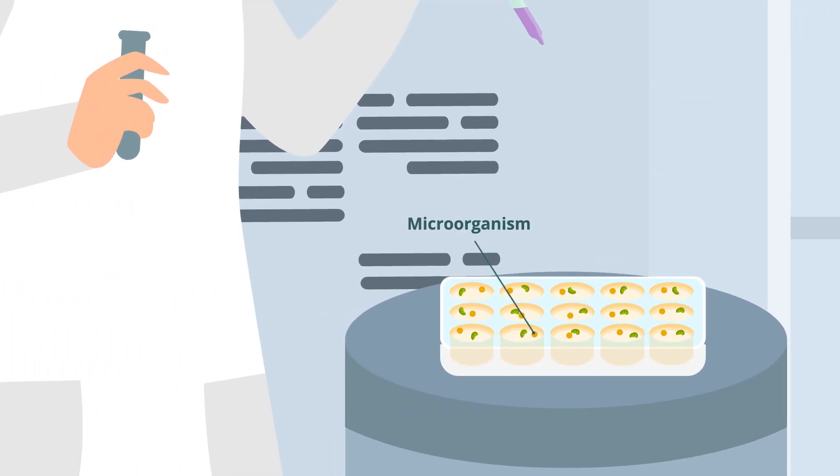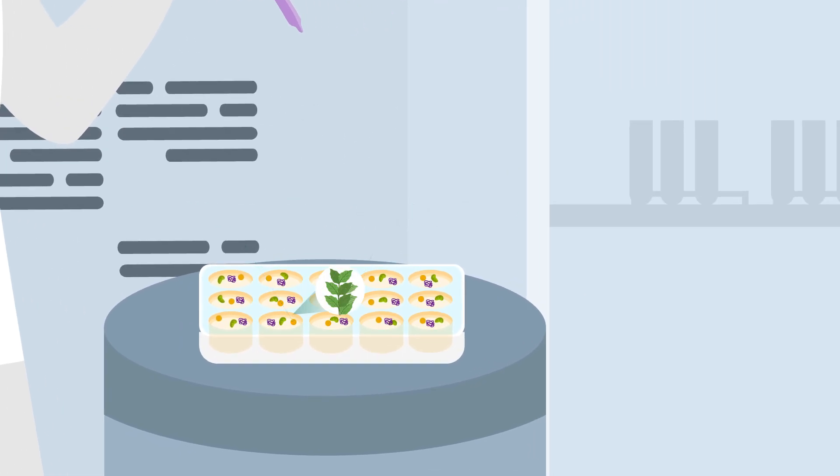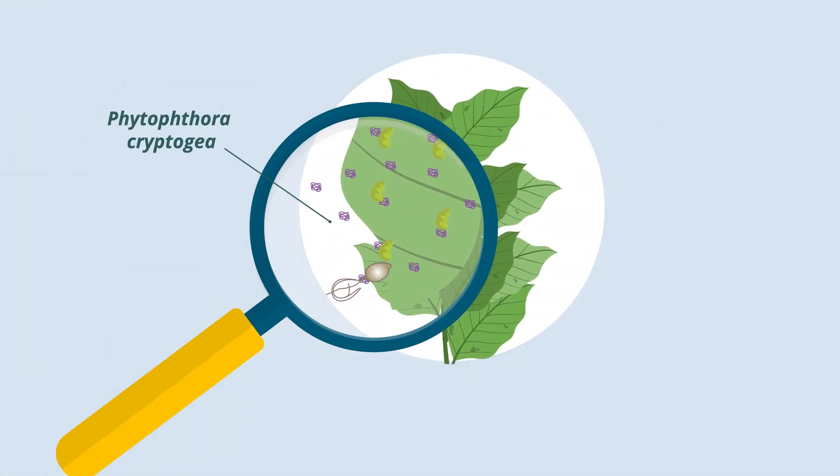To test a microorganism, they culture it together with the BY-2 cells. They later expose the BY-2 cells to cryptogene, which is a protein secreted by fungus-like pathogenic microorganisms that can elicit immune responses from tobacco plants.